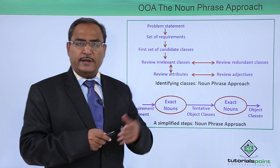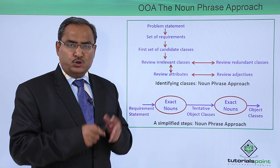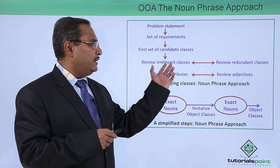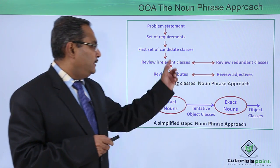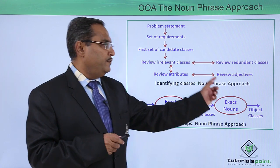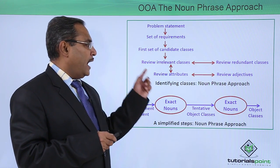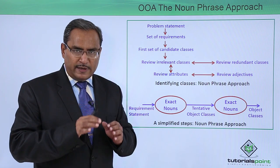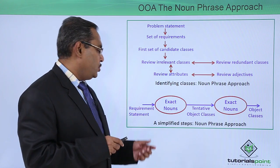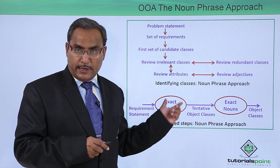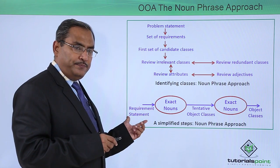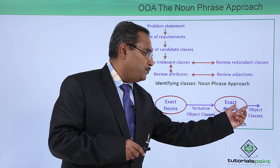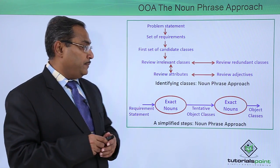Let us look at the diagram for better understanding. From the problem statement, which consists of a set of requirements, a first set of candidate classes is formed. Then we review irrelevant classes, redundant classes, attributes, and adjectives. In this way we identify classes using the noun phrase approach. A simplified diagram also shows: from a requirement statement, we identify exact nouns to produce tentative object classes, and those exact nouns produce the final object classes via the noun phrase approach.